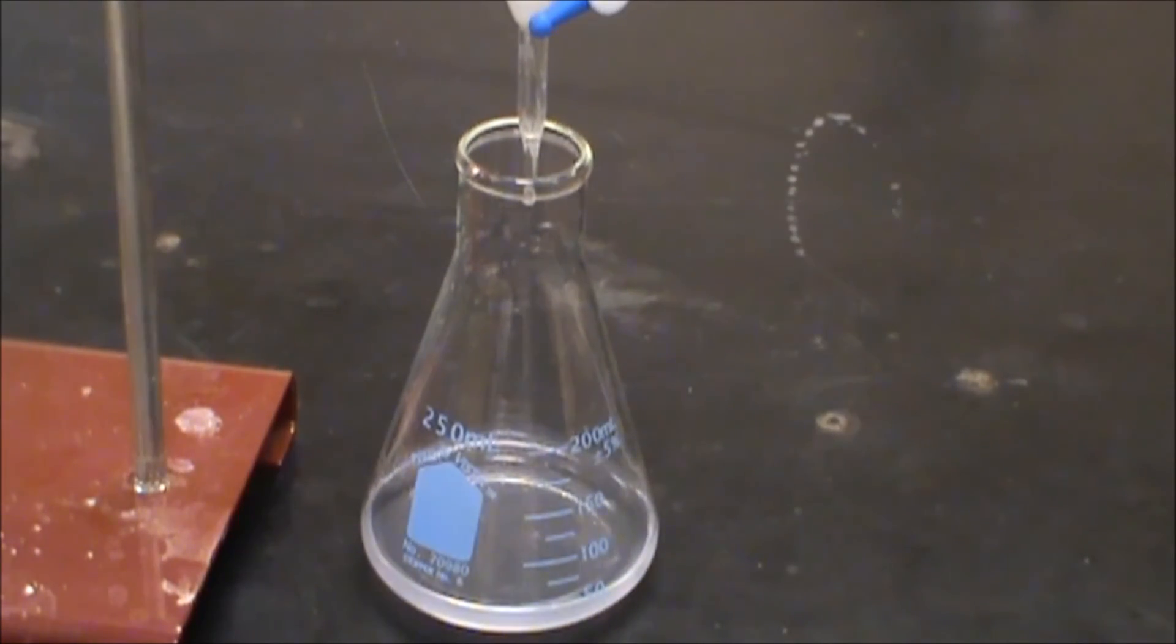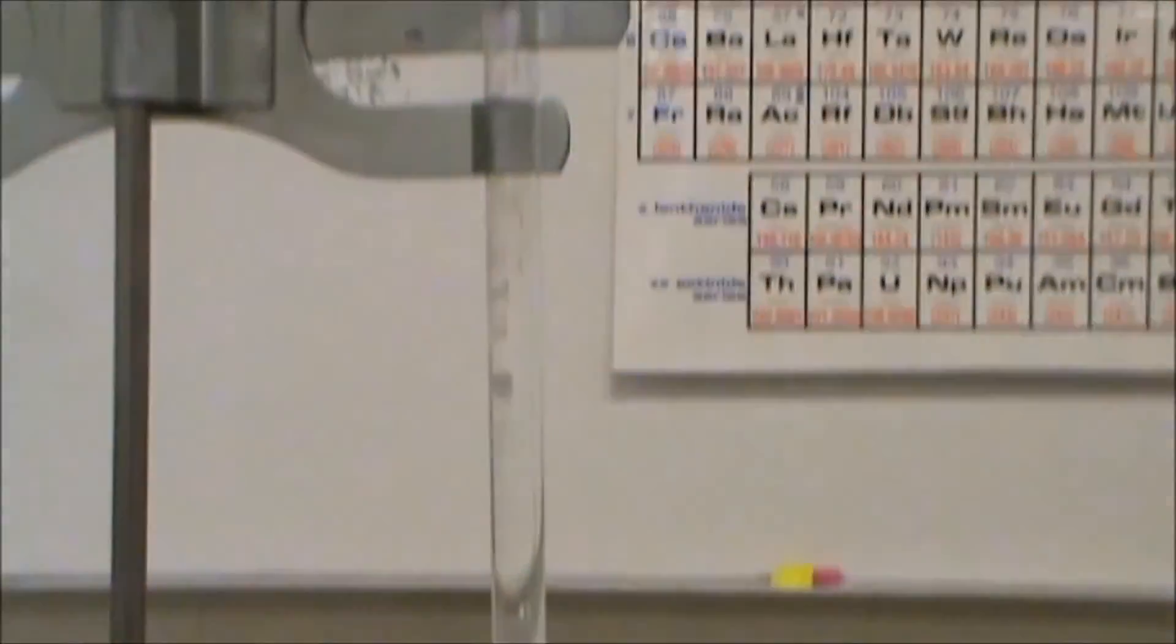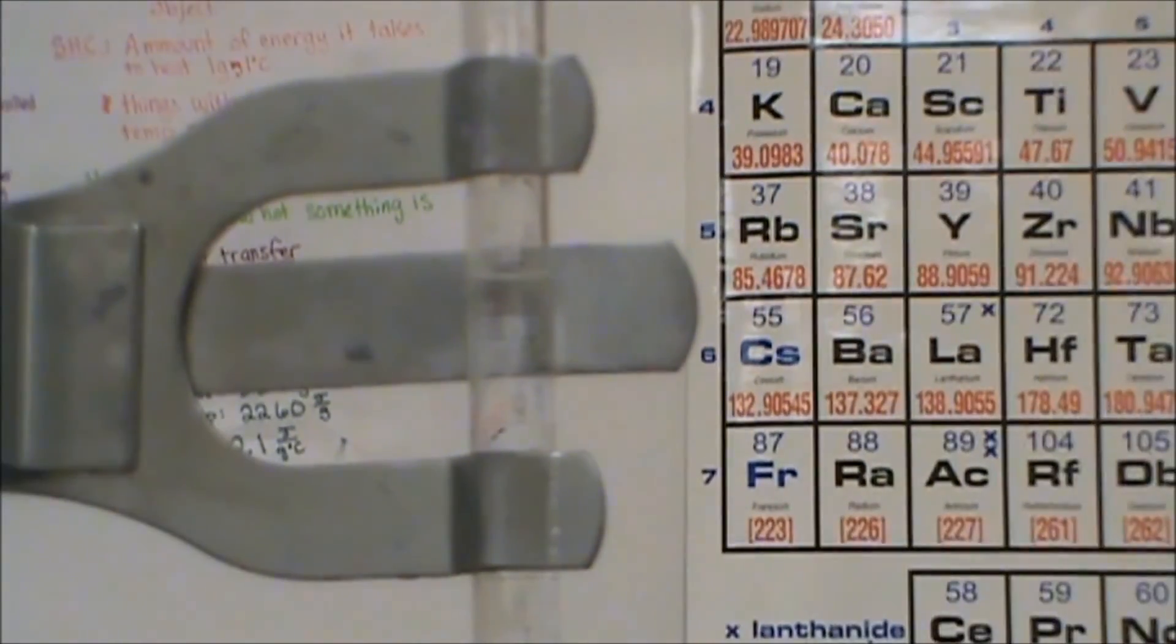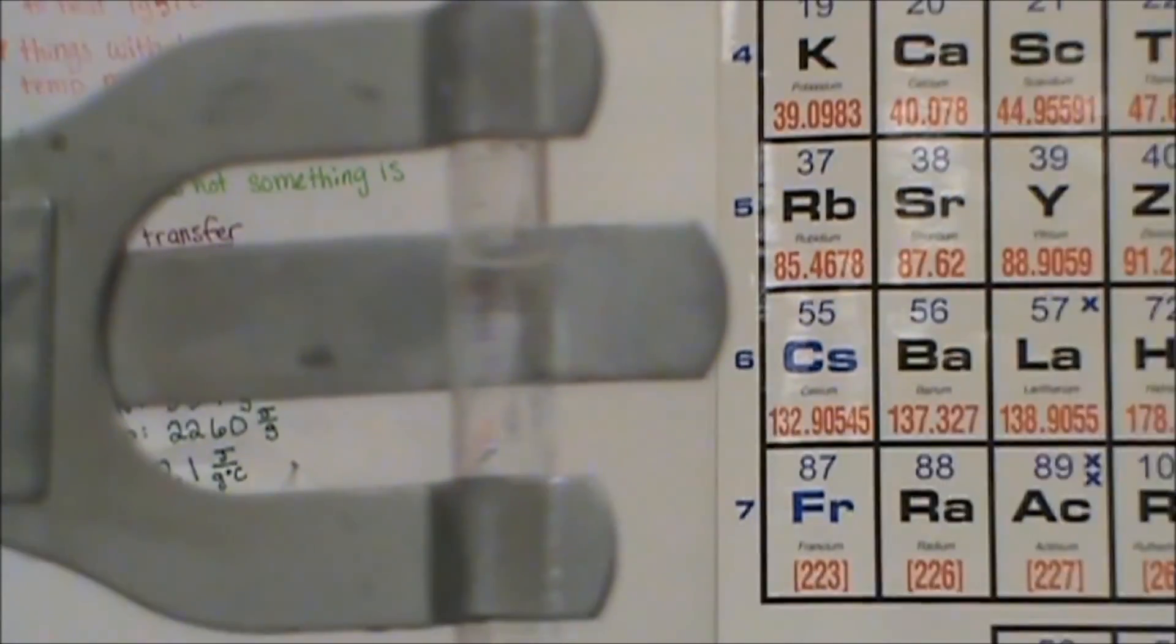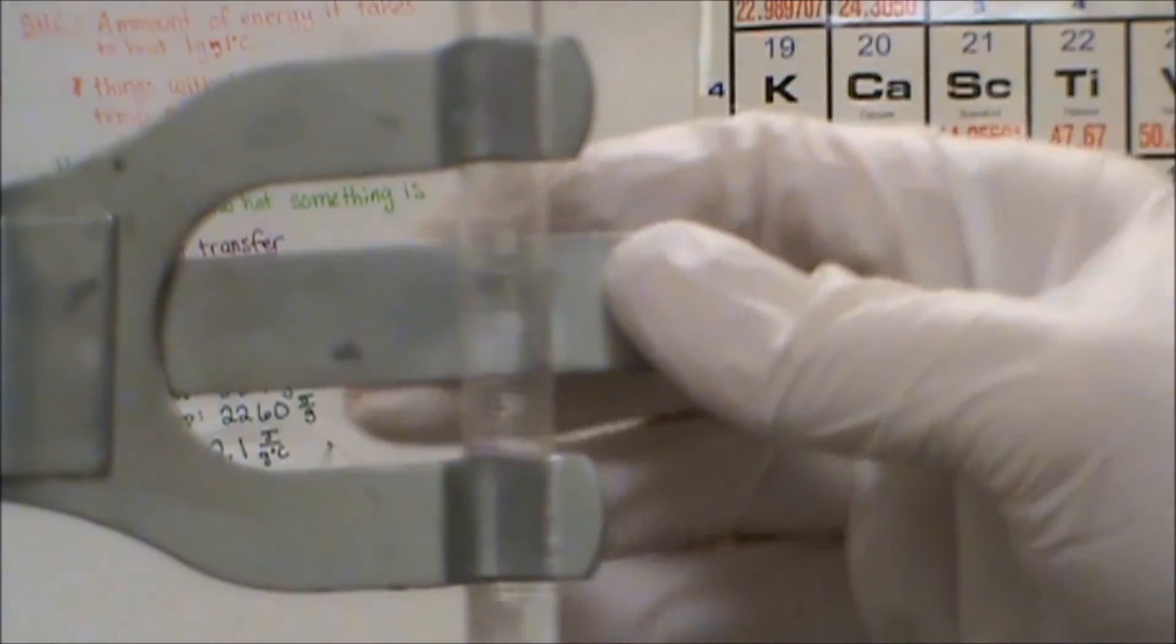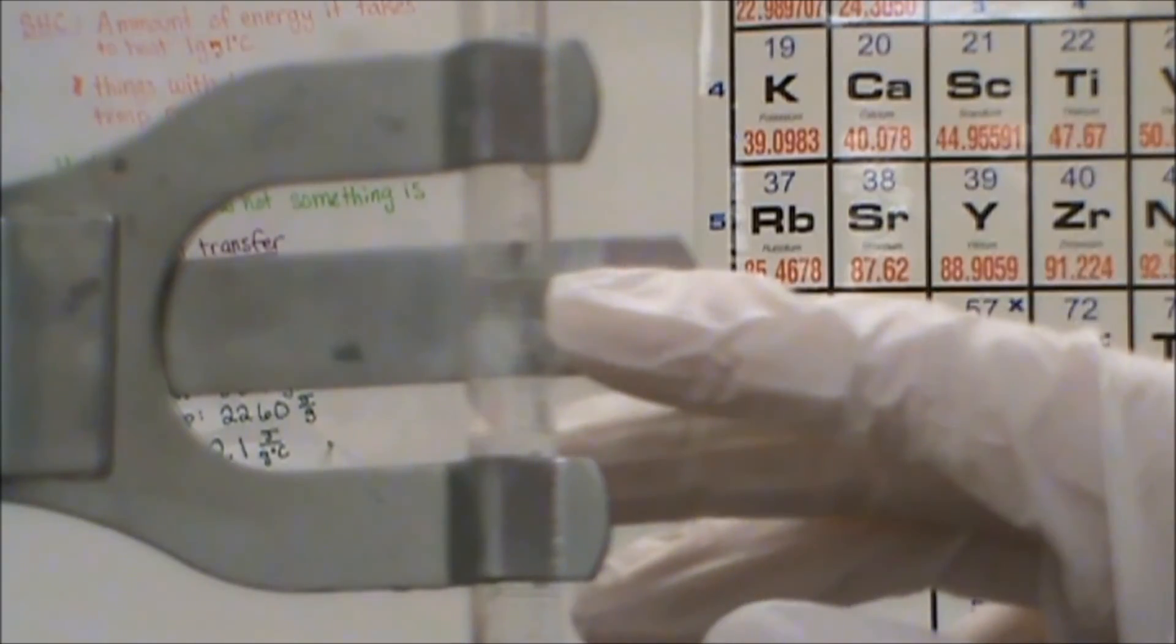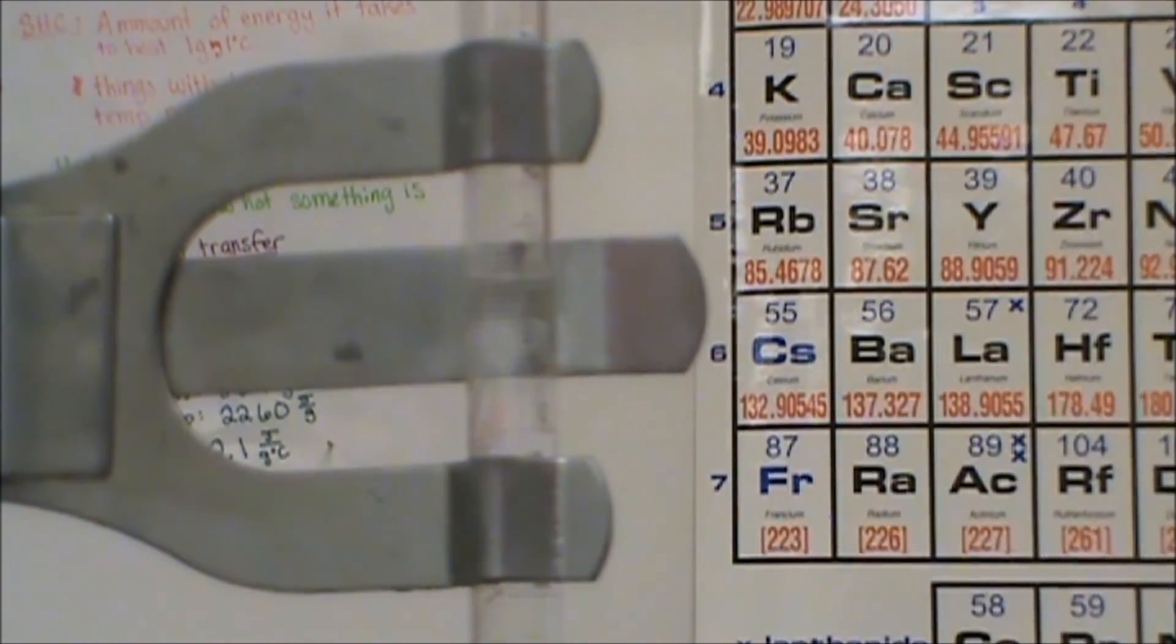Alright, so we might be off by a couple drops there. So now let's go ahead and take our final reading. Try to scoot this down to see. Our level is right here. Try to get that to focus. So we're just under 28.1, so let's say 28.12 milliliters.